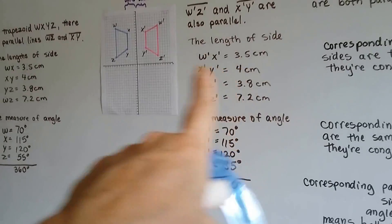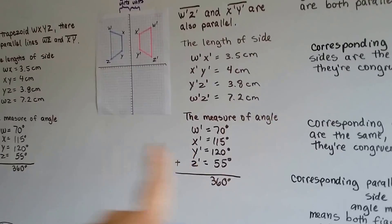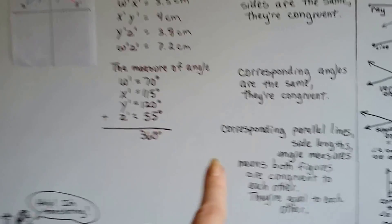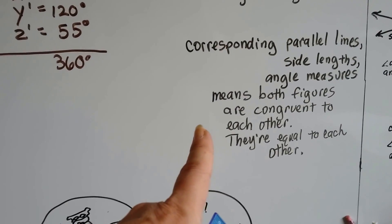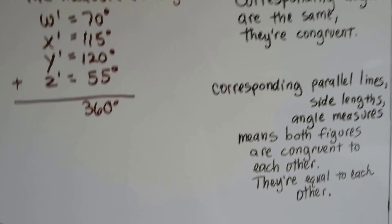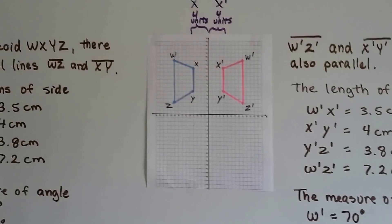The side lengths were the same. They had the same parallel lines. Their angle measures were the same. Well, corresponding parallel lines, side lengths, and angle measures means both figures are congruent to each other. They're equal to each other. They just don't have the same orientation.